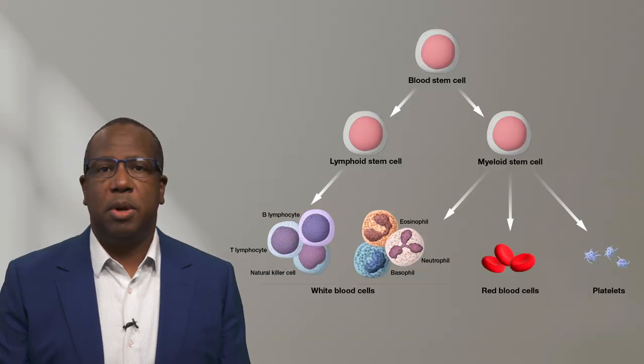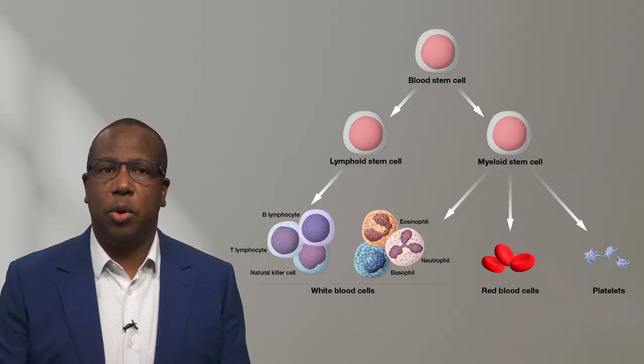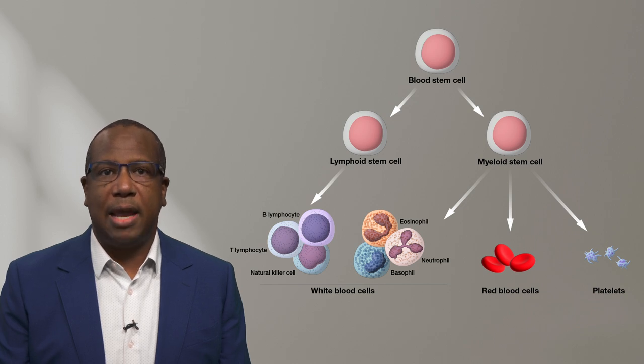Blood stem cells can develop into all types of blood cells in your body, including white blood cells, red blood cells, and platelets. Blood stem cells are also called hematopoietic stem cells, and they live and divide in your bone marrow.